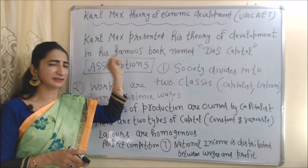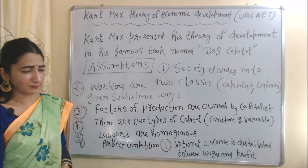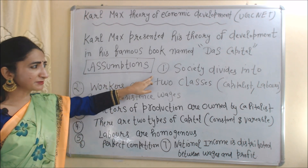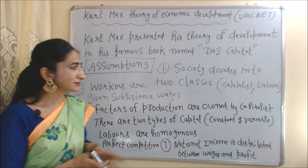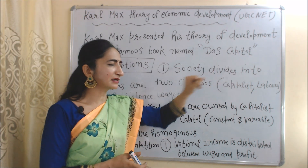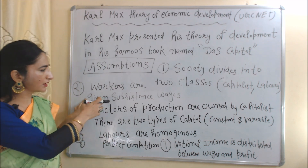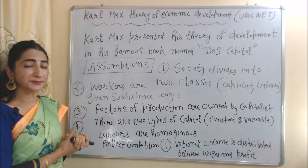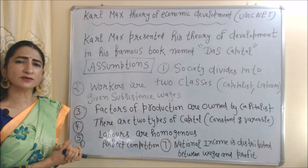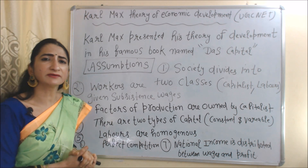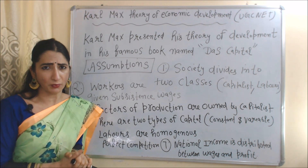This theory is based on some assumptions. The first assumption is that society is divided into two classes: the capitalist class and the labor class. The second assumption is that workers are given subsistence wages — meaning workers are given only that amount of wages in which they can survive.